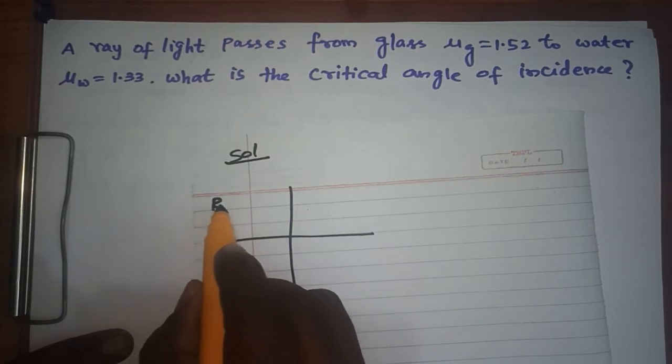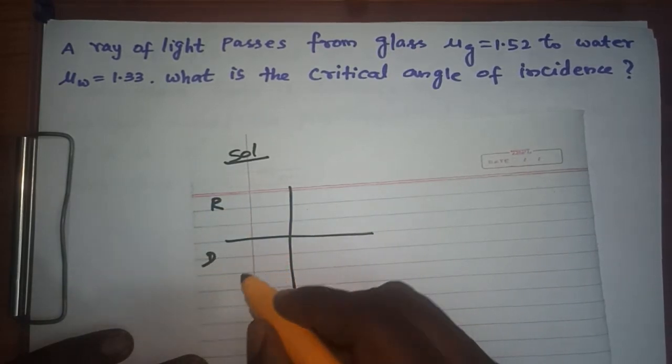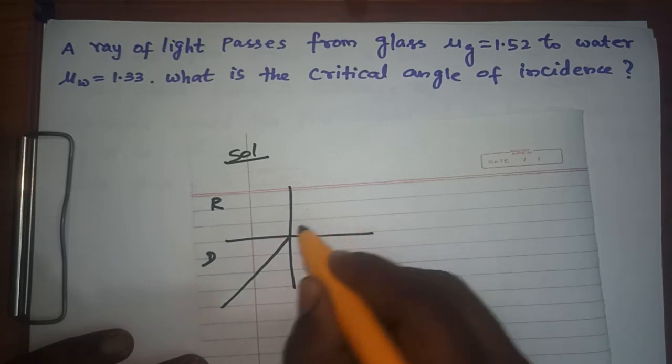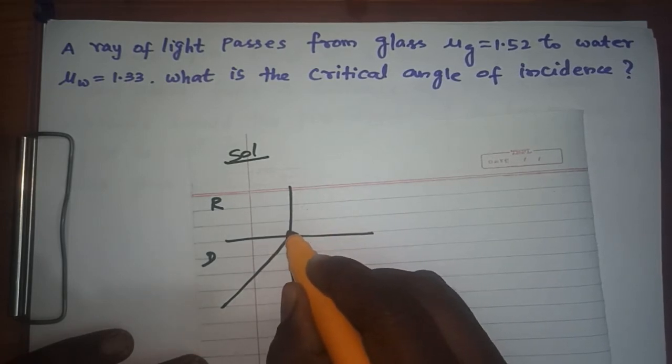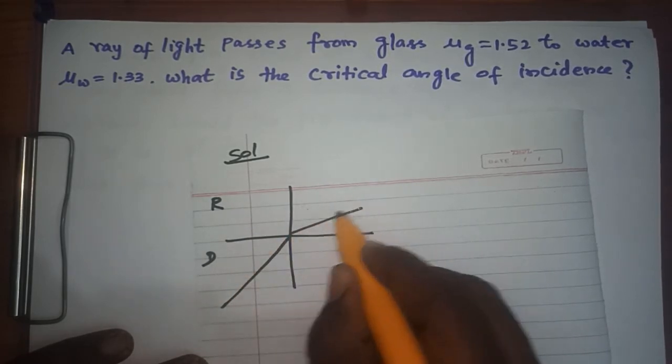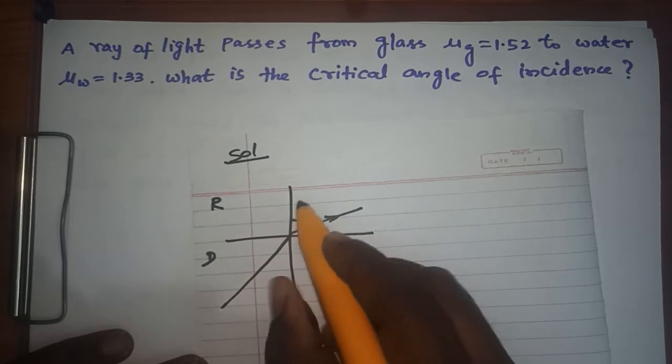When a ray passes from one medium to another, the ray gets refracted. Let us consider this is a rarer medium and this is a denser medium. When a ray passes from one medium to another it bends.